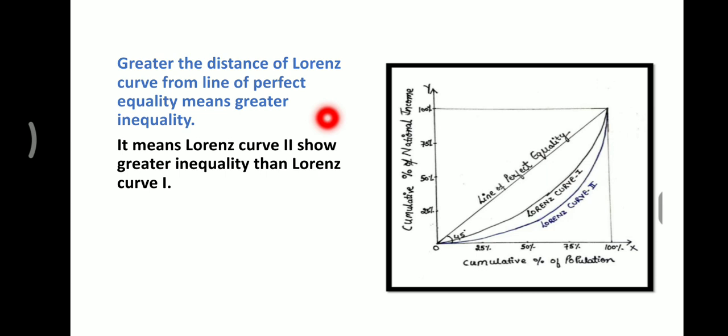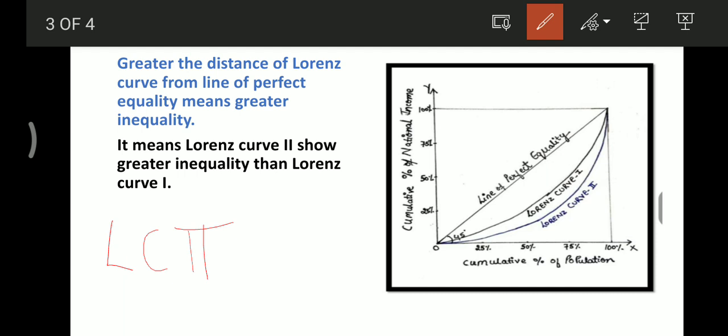Let's say we have two Lorenz curves from two datasets. The black pen represents Lorenz curve one, and the blue pen represents Lorenz curve two. Lorenz curve two is farther away from the equality line, so we can say that Lorenz curve two is showing greater inequality than Lorenz curve one.